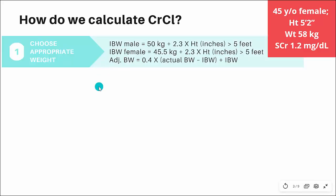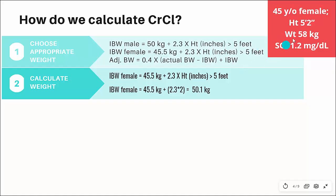The first thing you have to do is choose the appropriate weight. We'll start by identifying if the patient is male or female. Since this is a 45-year-old female, we use the equation: 45.5 kilograms plus 2.3 times every inch over 5 feet. This patient is 5'2", so they are 2 inches over 5 feet. You input a 2, and after calculating, the ideal body weight is 50 kilograms.